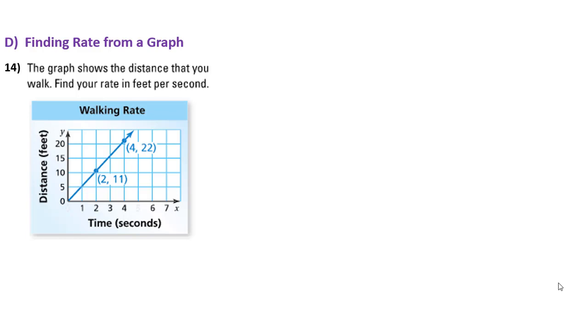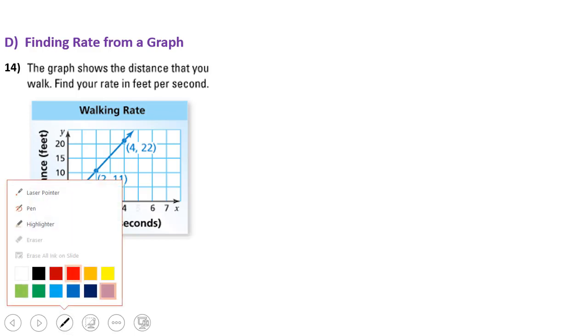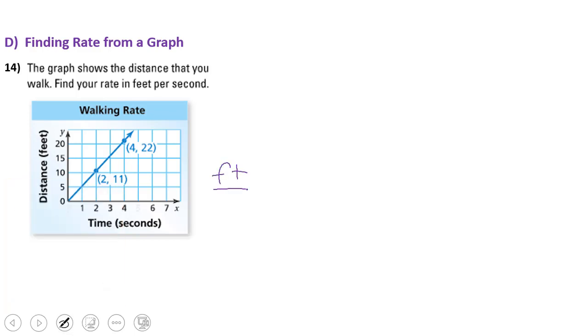This says the graph shows the distance you walk. Find your rate in feet per second. Now the easiest thing you would think to do would be say, I want feet per second. So I can write that ratio to look like this, feet per second.